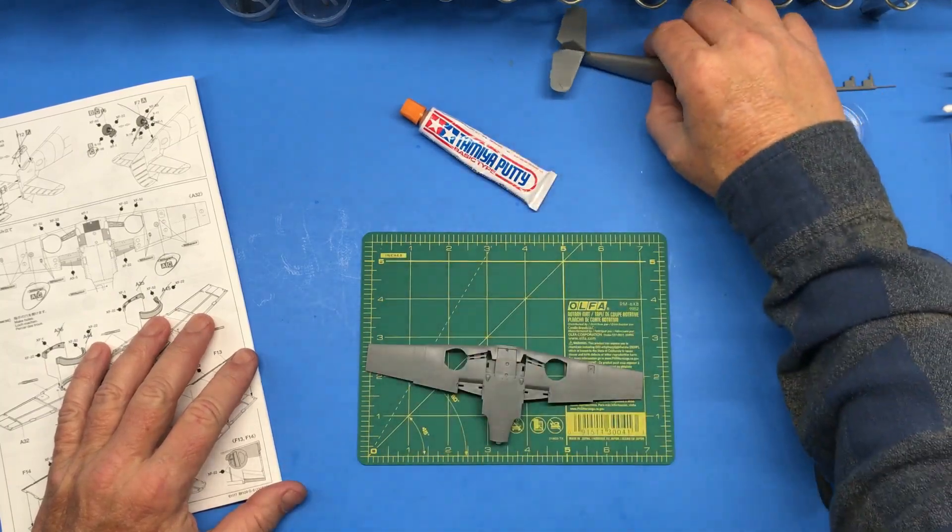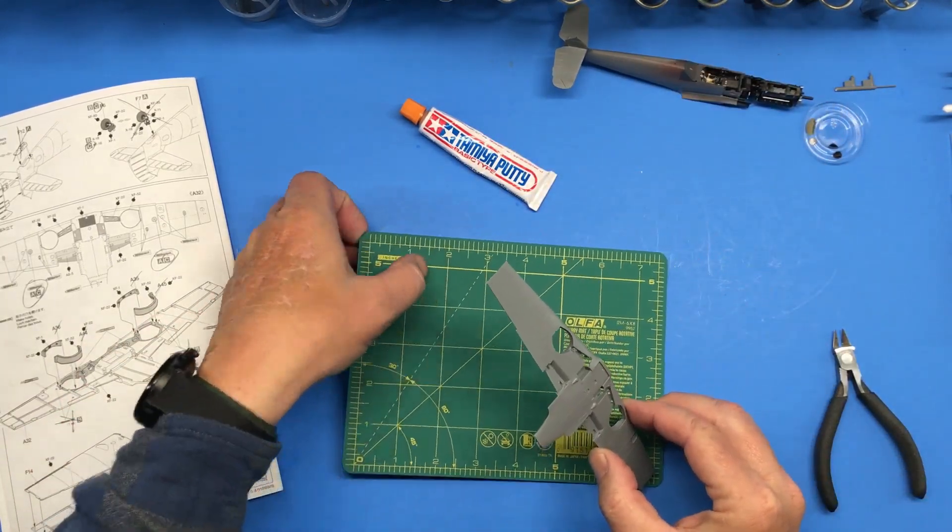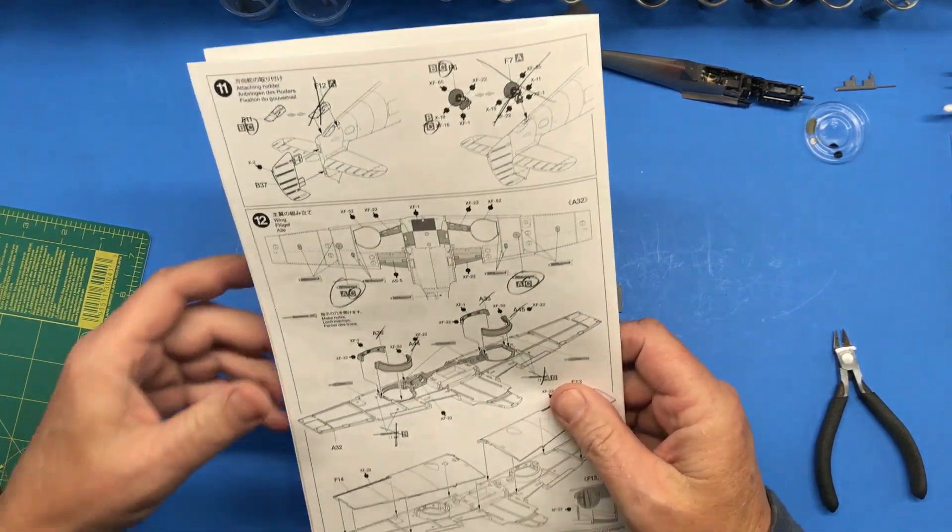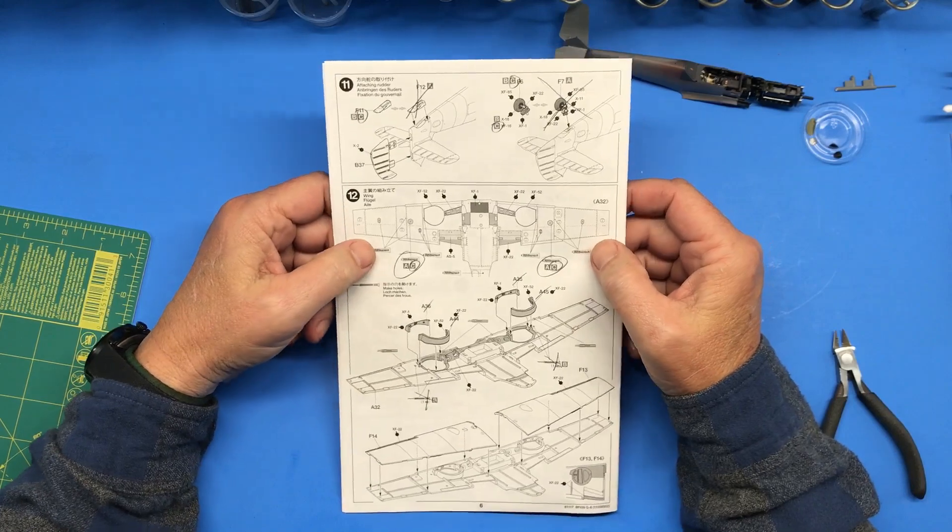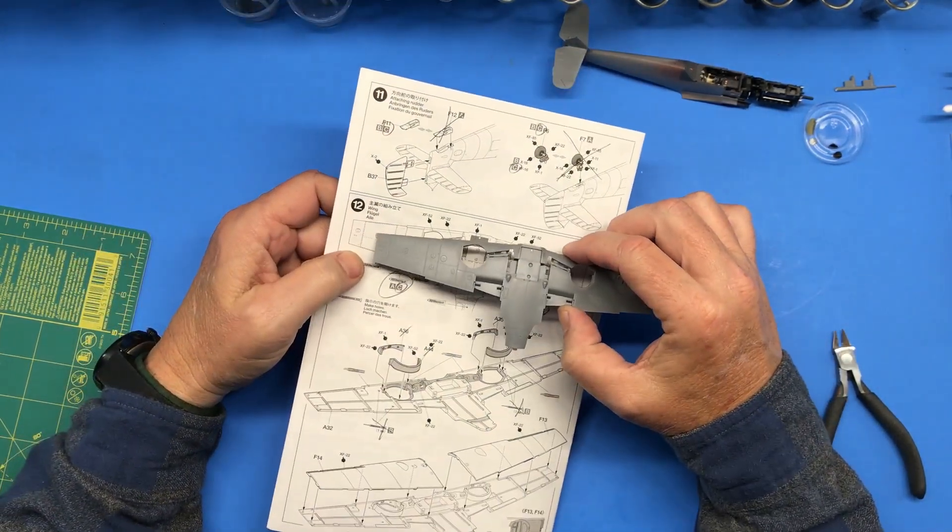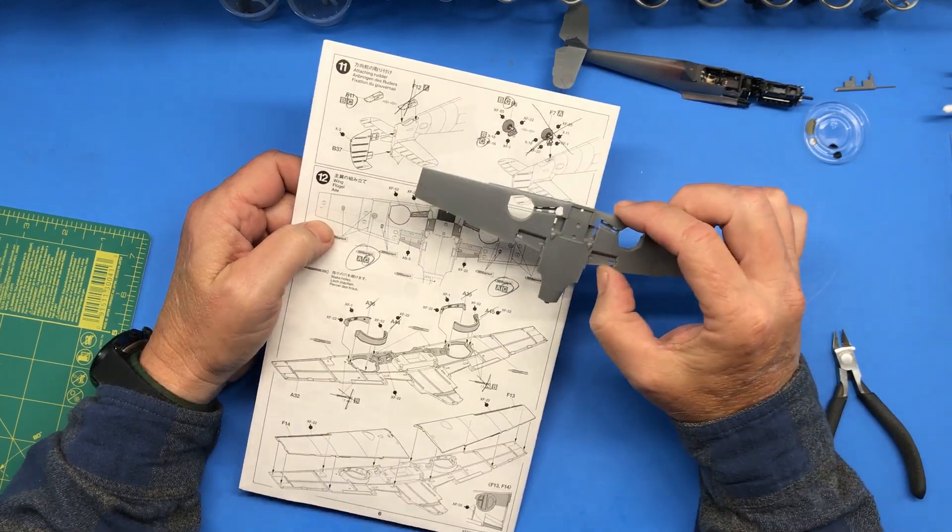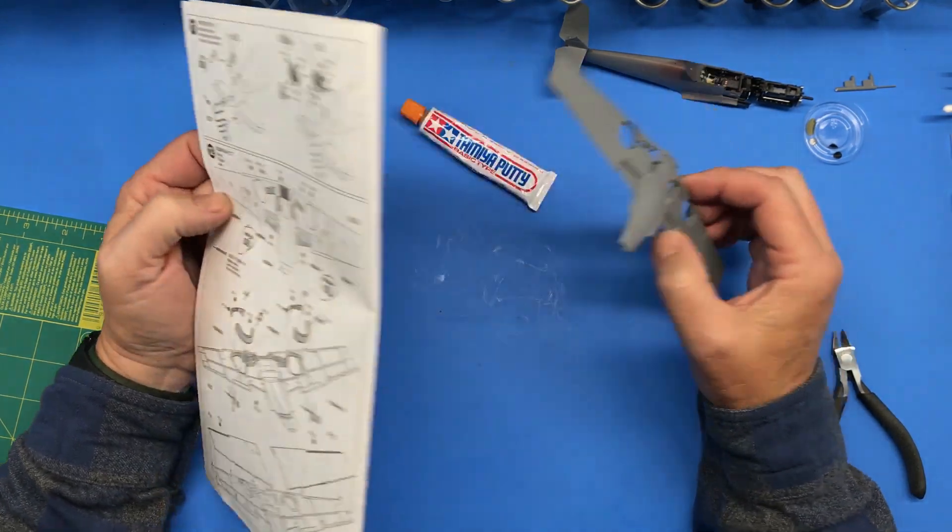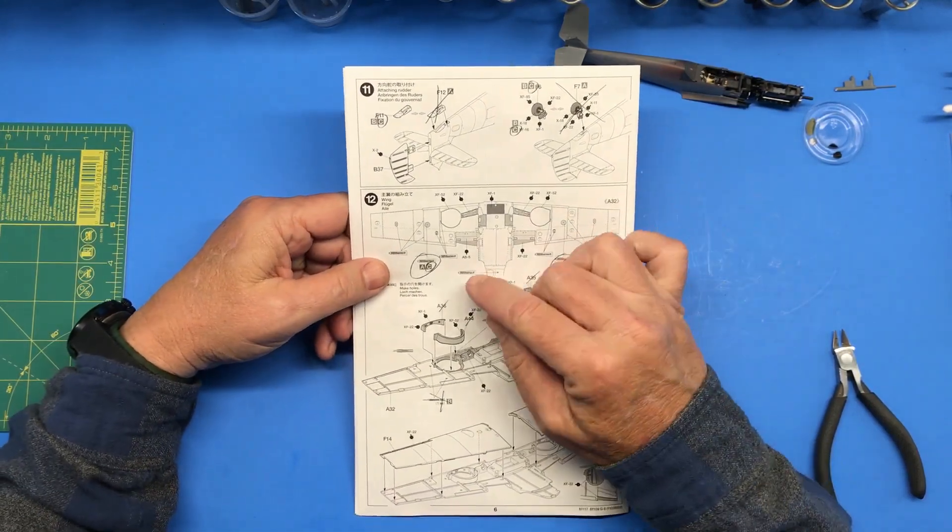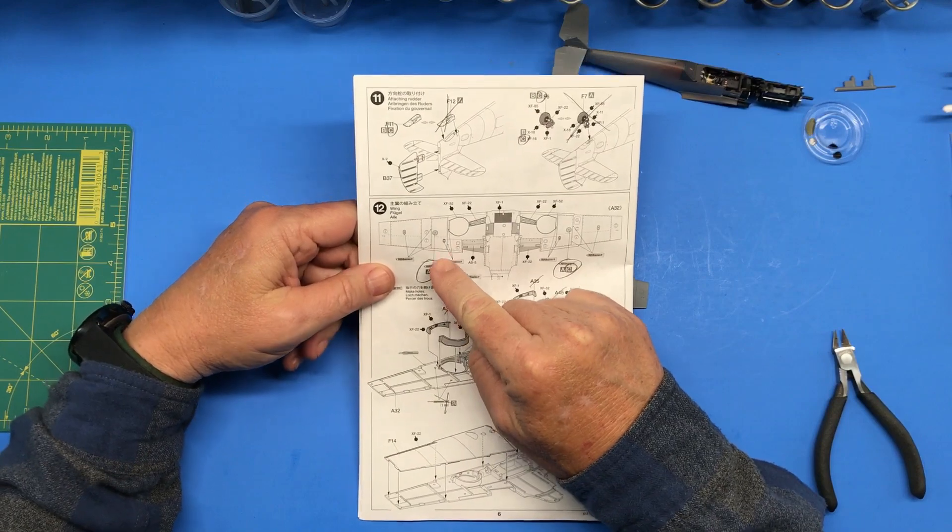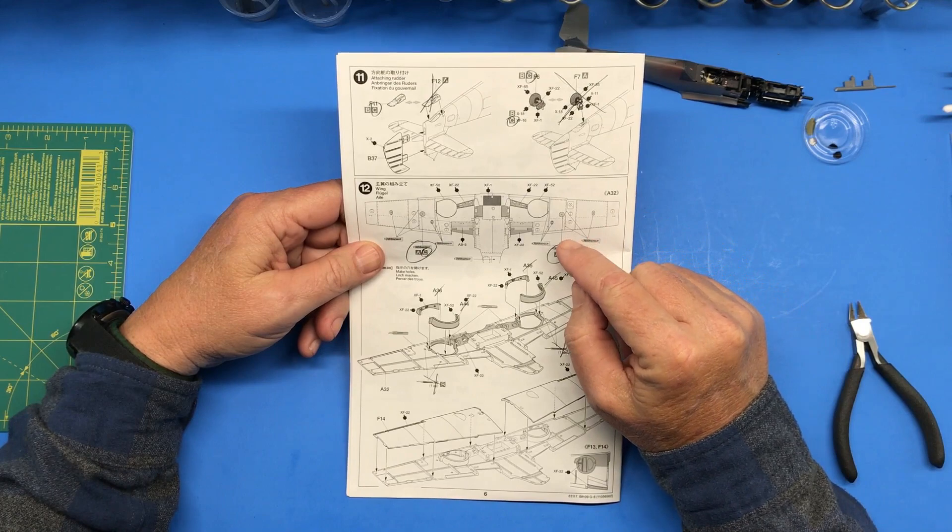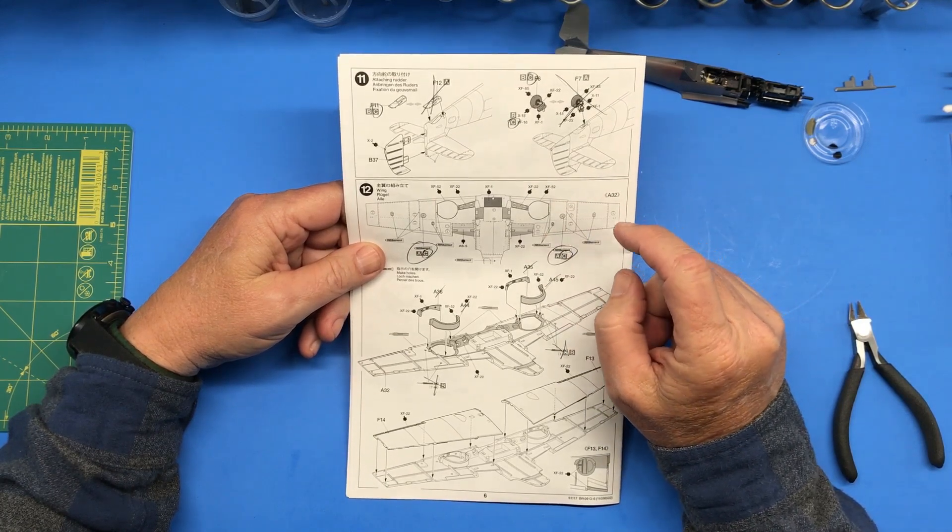All right, real quick - not the tail done but here's one thing that I'm going to have to do. Because of the version that I am doing, there are a lot of panels and access things on the bottom of this aircraft. Since I'm doing version C, I've got some I have to fill - one, two, three, four, five, six, seven to be exact.